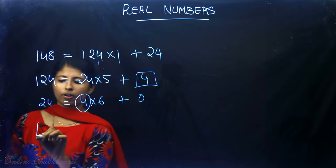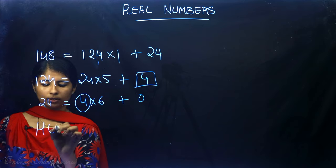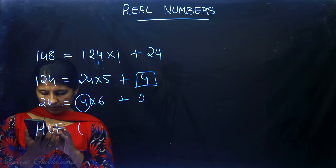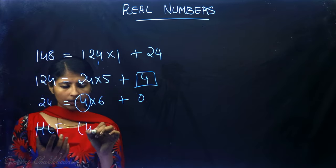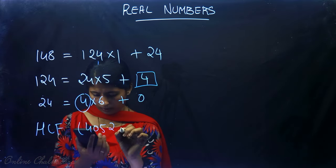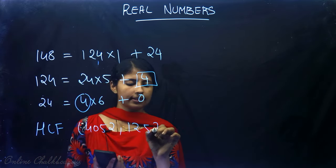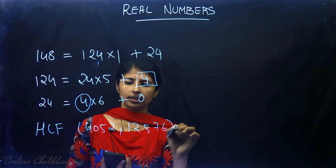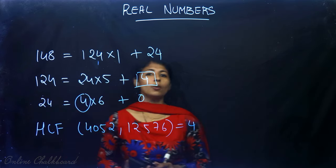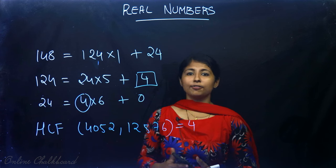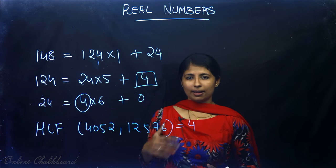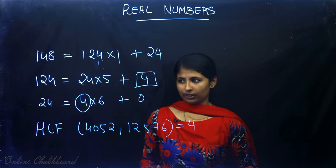The HCF of 4052 and 12576 is 4. This is how we find the HCF using Euclid's division algorithm.